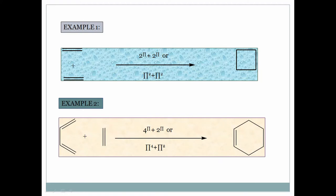For 2π+2π cycloaddition, if you take an ethylene molecule combining with another ethylene molecule, one sigma bond is generated here and another sigma bond is generated there. Two pi bonds are consumed — each ethylene having one pi bond — and you get a cyclobutane product with two new sigma bonds generated.